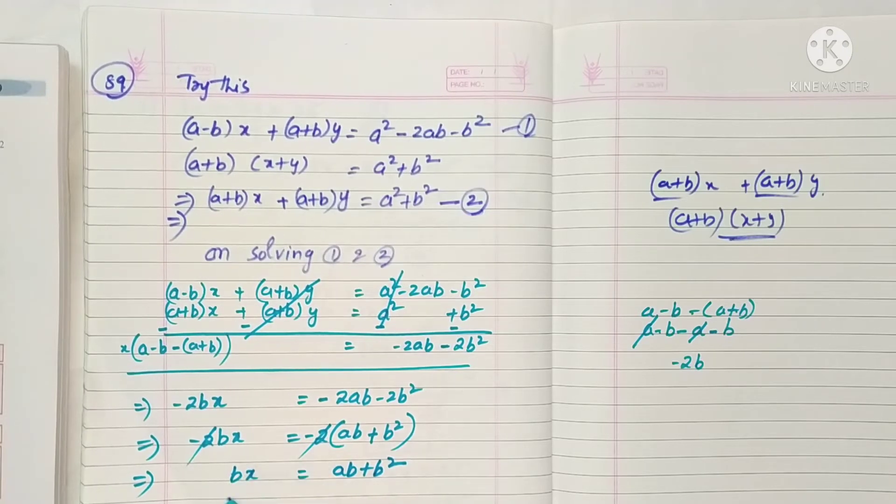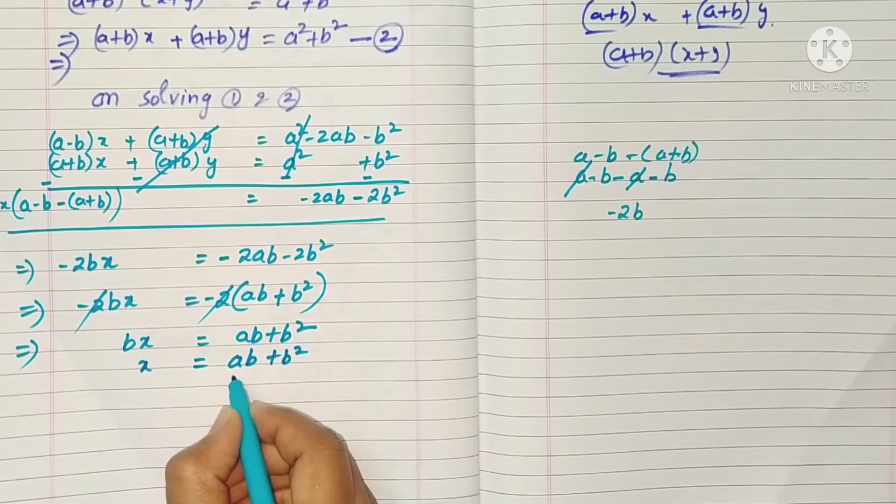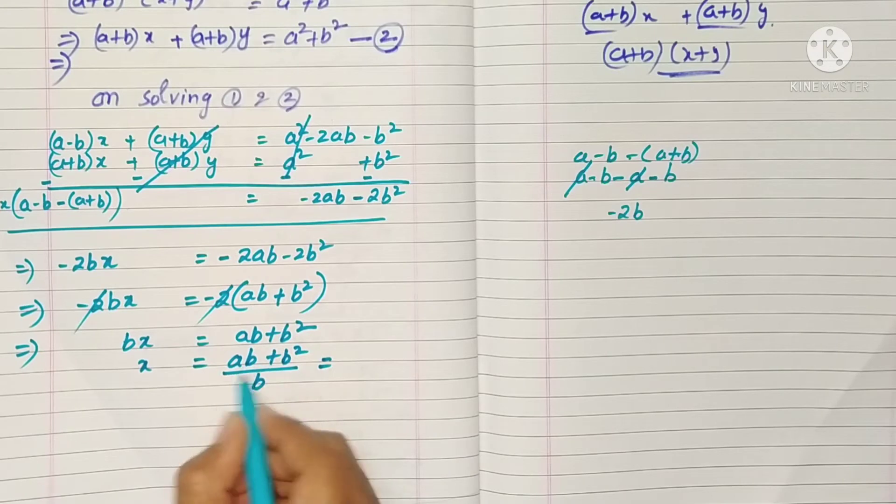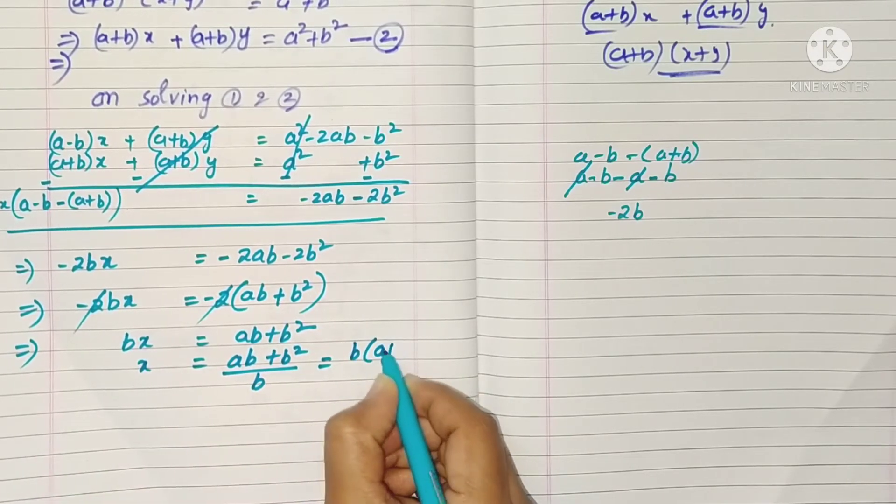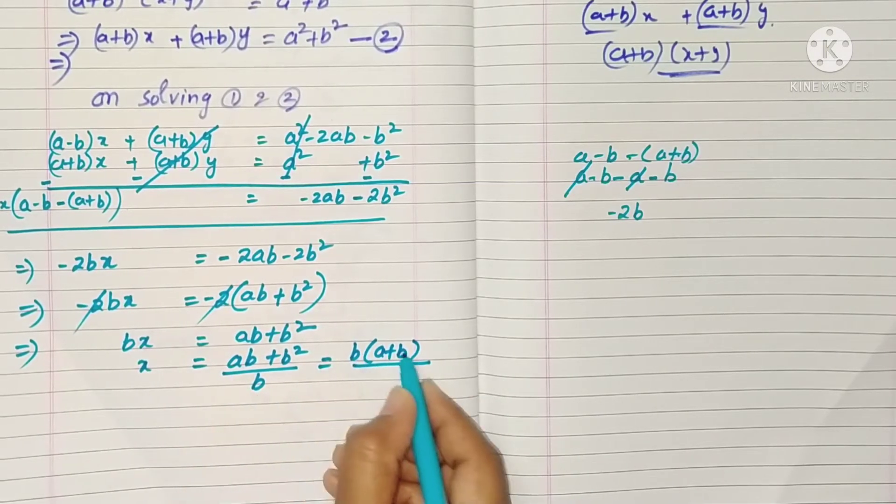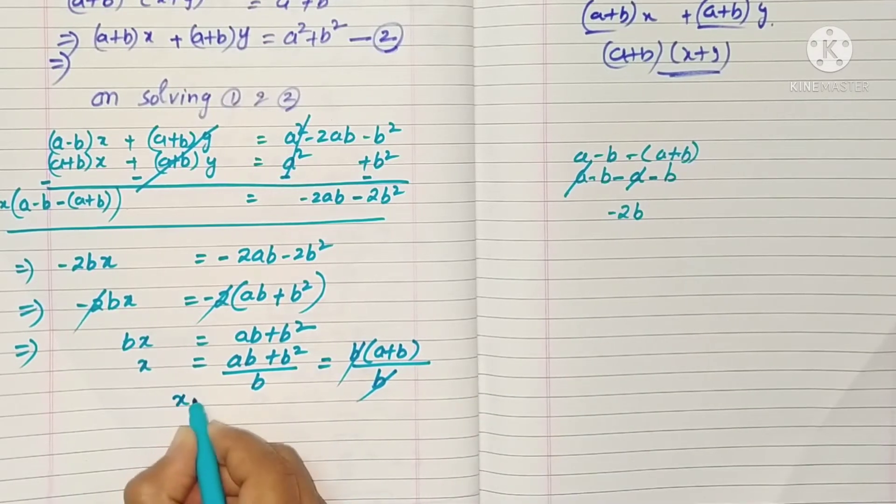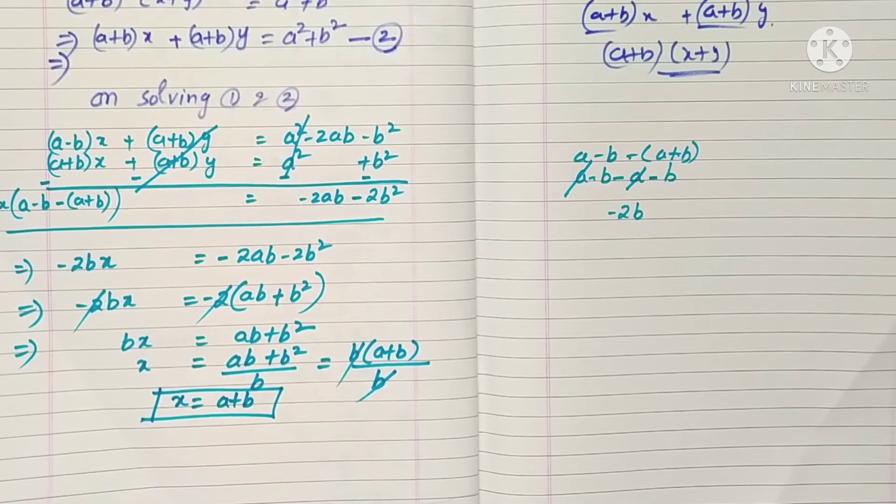Actually we want to find out x. So x is equal to (ab + b²) divided by b. Here in the numerator, b term is common. So b times (a + b), b into a is ab, b into b is b², divided by b. The b's will cancel. So x value is a plus b, okay?